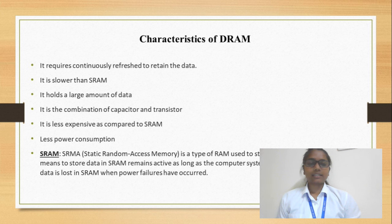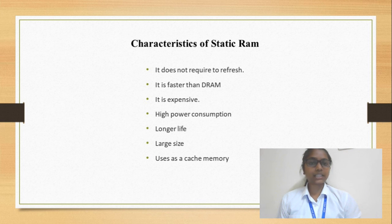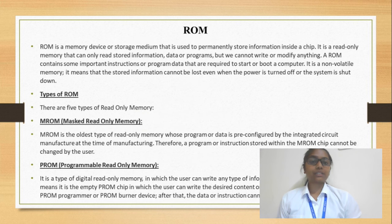The second type is SRAM, which stands for Static Random Access Memory. It is used to store static data. Its characteristics: it works much faster than DRAM, it is very expensive, it retains data longer, and it does not need to be refreshed periodically because it does not use a capacitor.